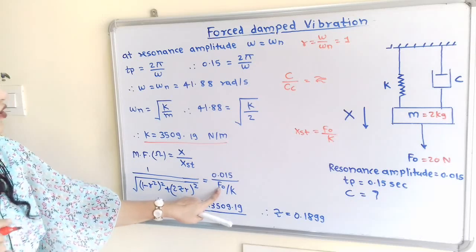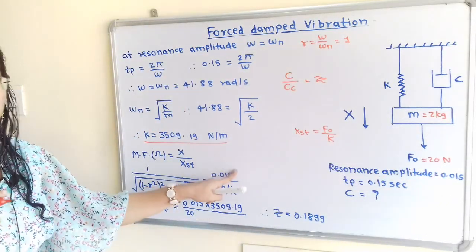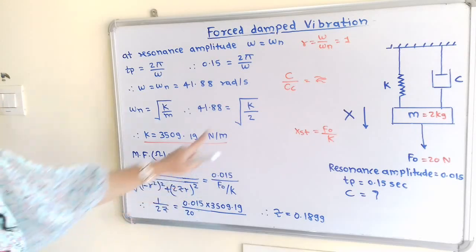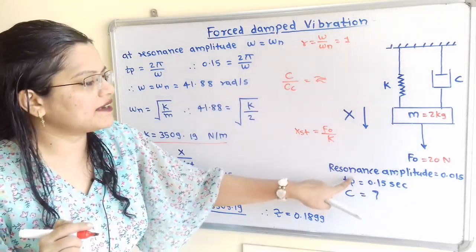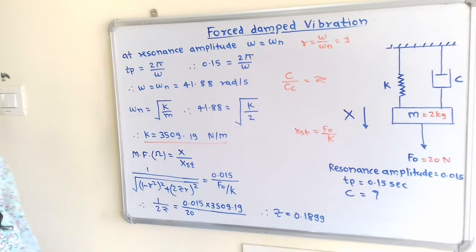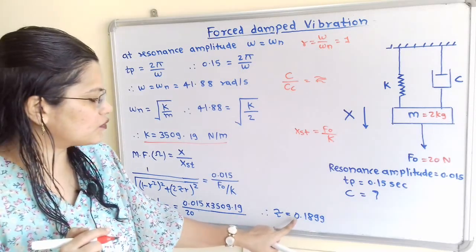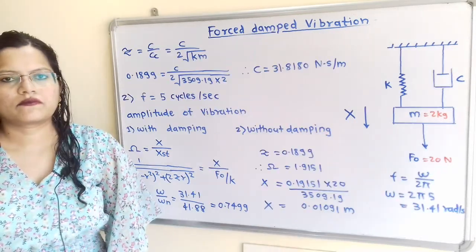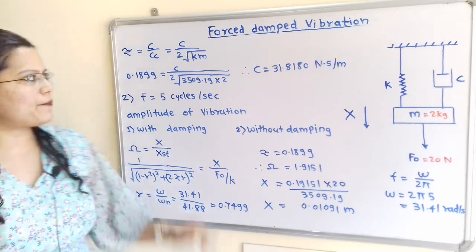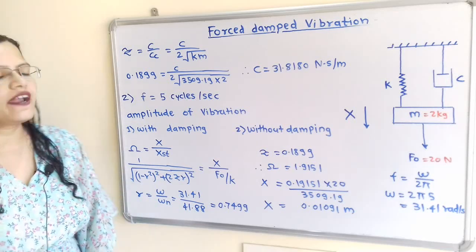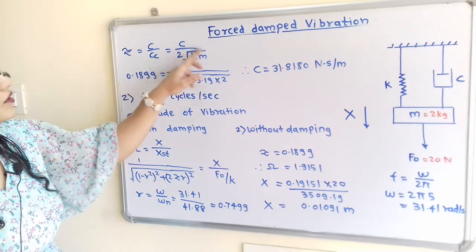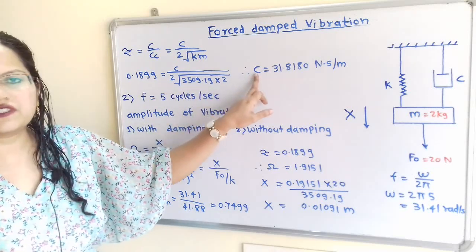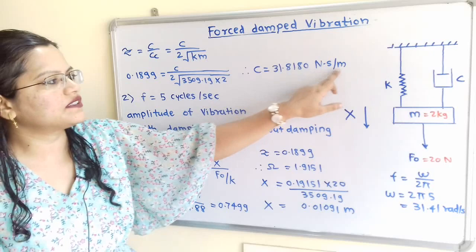Putting in the values: F₀ = 20 N, K = 3509.19. With R = 1 (resonant amplitude), the only unknown is zeta. Solving, zeta = 0.1899 — the damping factor. Zeta is the ratio of damping coefficient C to critical damping coefficient C_c, where C_c = 2√(KM). Putting in K and M, the damping coefficient C = 31.8180 Newton·second per meter.